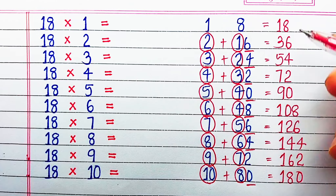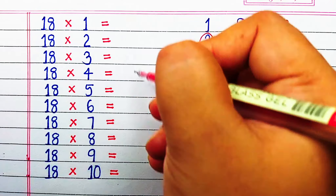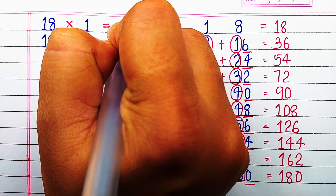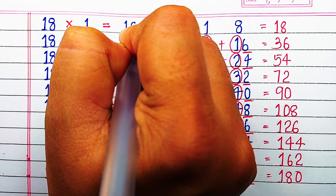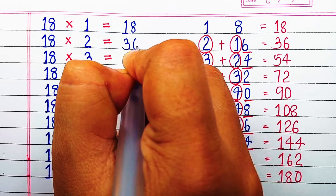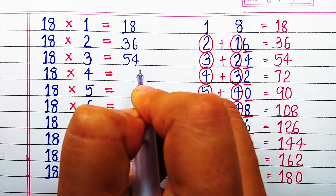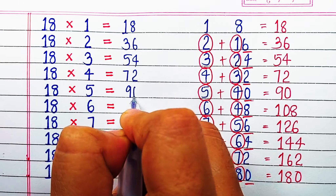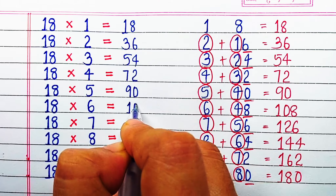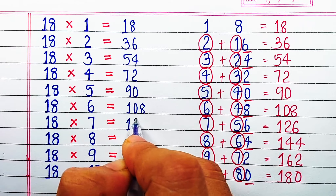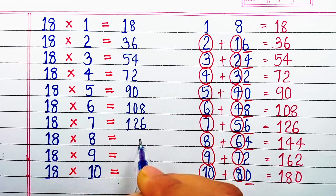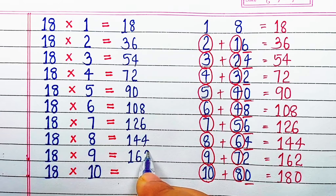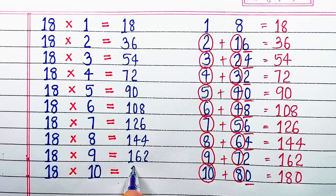With this we have got the table of 18. So let's start writing: 18×1=18, 18×2=36, 18×3=54, 18×4=72, 18×5=90, 18×6=108, 18×7=126, 18×8=144, 18×9=162, 18×10=180.